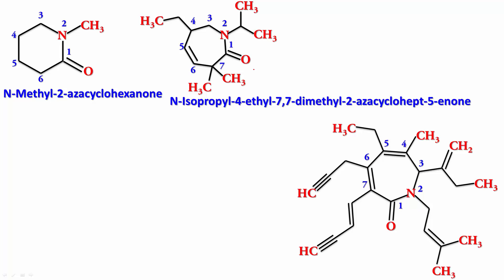First write the base name. It is 2-azacyclohepta, because there are two double bonds, hepta-4,6-dienone. Now come all the substituents on the ring. So let's number them first. This one is one, two, three, four - the one on N. Then one, two, three, four - the one on the seventh carbon.